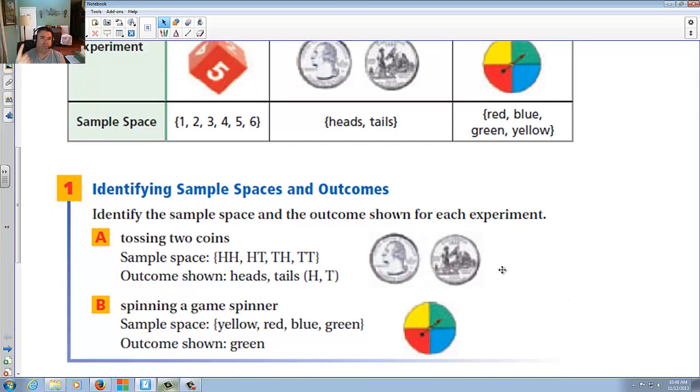The one that happens to land is one possible outcome out of four. Spinning it on the game spinner is the same idea. You have yellow, red, blue, and green, and let's say we rolled a green, so we have one out of four. In that case, there's a one out of four chance you're going to hit green.